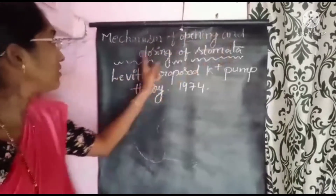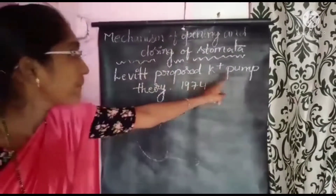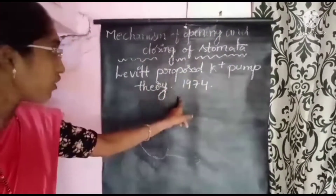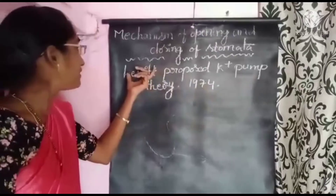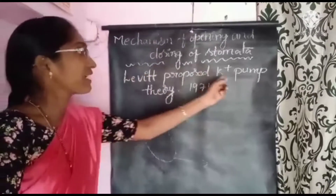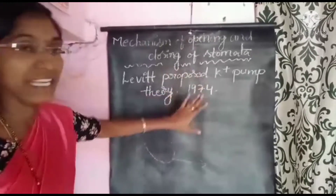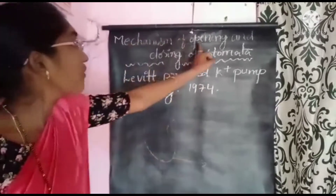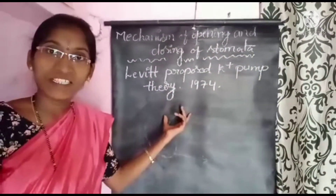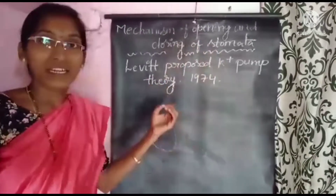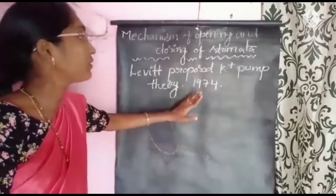Mechanism of opening and closing of stomata: Leavitt proposed the K+ Pump Theory in the year 1974. This theory explains the mechanism of opening and closing of stomata — how stomata open or close. According to this theory, accumulation of K+ ions into guard cells from surrounding subsidiary cells drives the process.